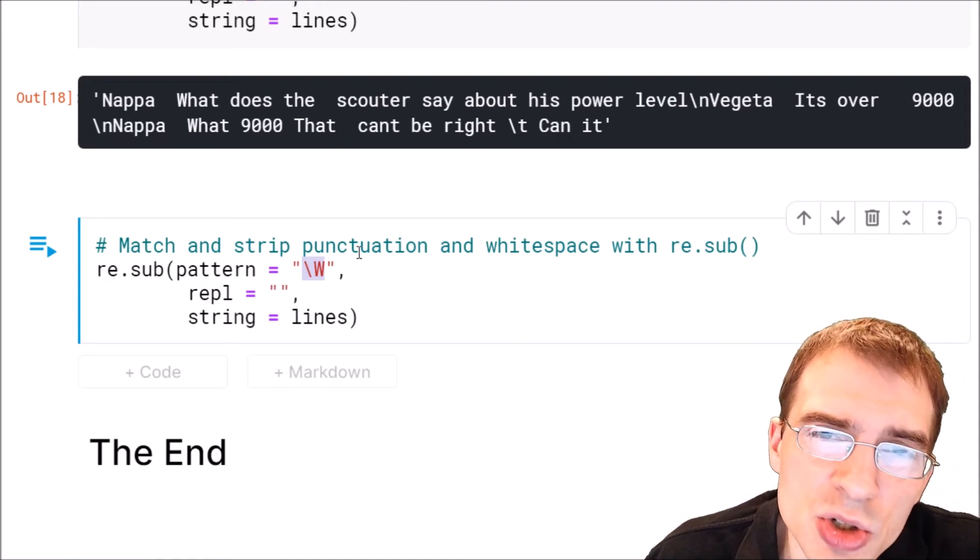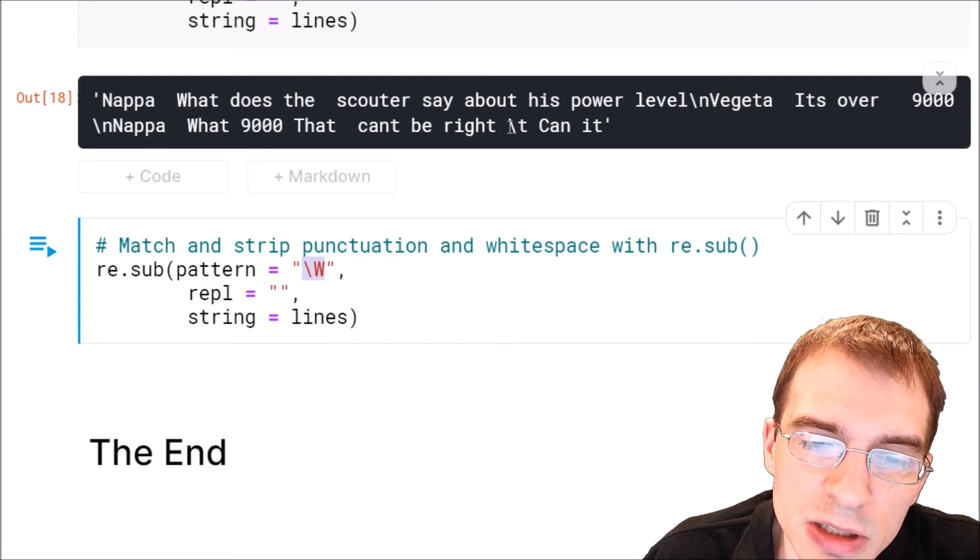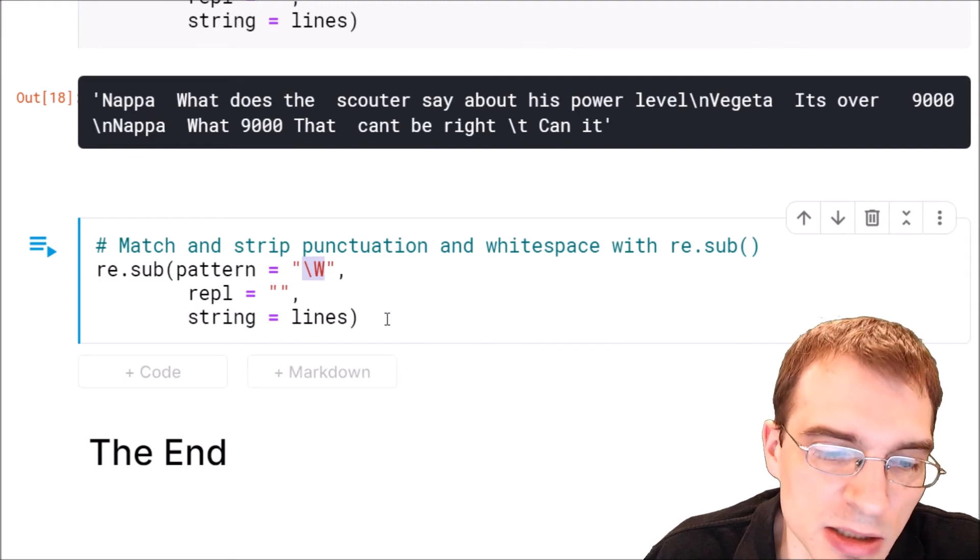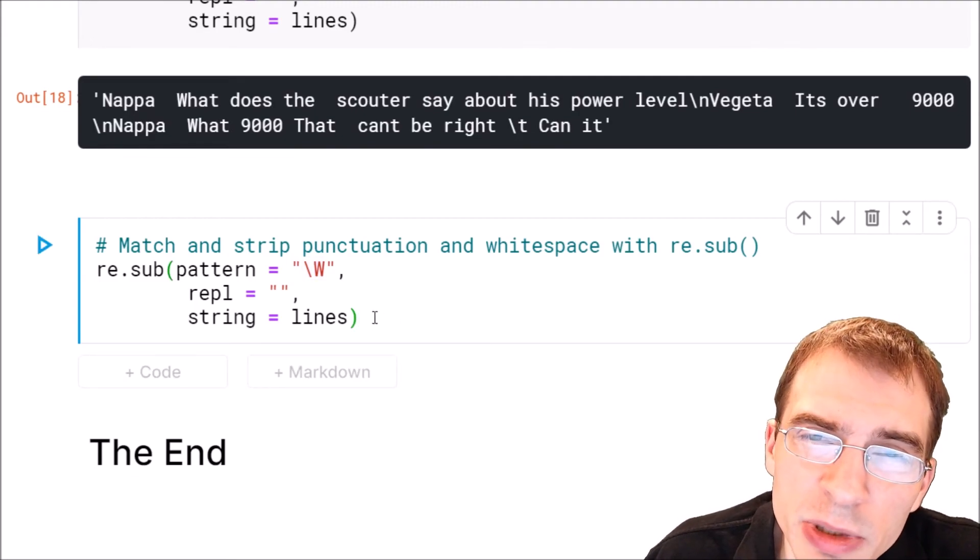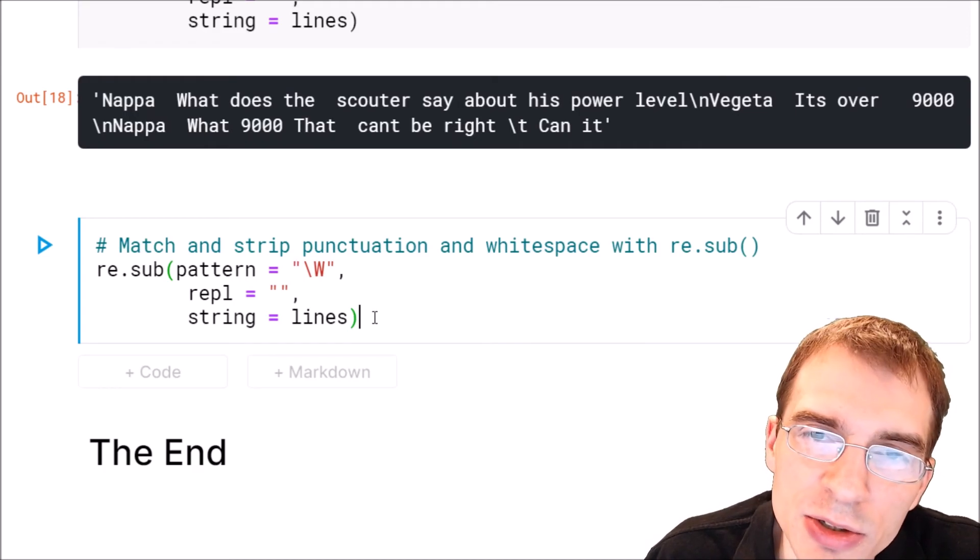not only should it match and strip out all of the punctuation, but it should also find and strip out all of these tabs, new lines, and even the spaces, because this is matching anything that's not alphanumeric. We should now be left with one long string that's only alphanumeric characters all in a row.